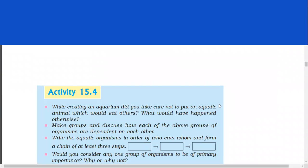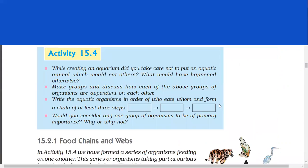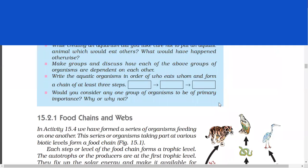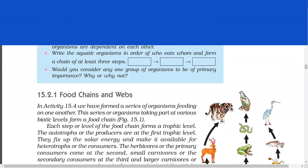Activity 15.4. While creating an aquarium, did you take care not to put an aquatic animal which would eat others? What would have happened otherwise? Make groups and discuss how each of the above groups of organisms are dependent on each other. Write aquatic organisms in order of who eats whom and form a chain of at least three steps. Would you consider any one group of organisms to be of primary importance? Why or why not?